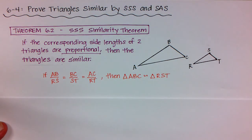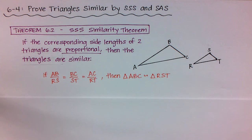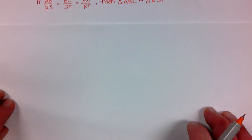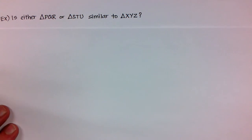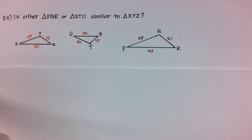Okay, so it's pretty awesome. You're going to remember it. We already have the AA, the angle angle, so now we have SSS. So here is an example for you. This example wants to know is either triangle PQR or triangle STU similar to this other triangle XYZ. So I have all three triangles drawn for you.